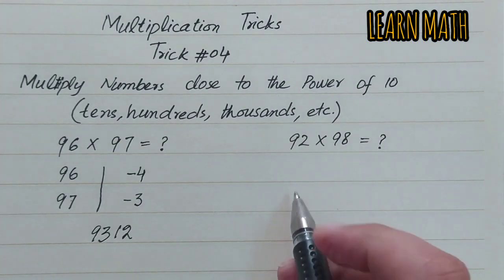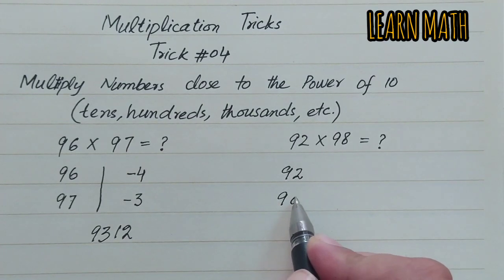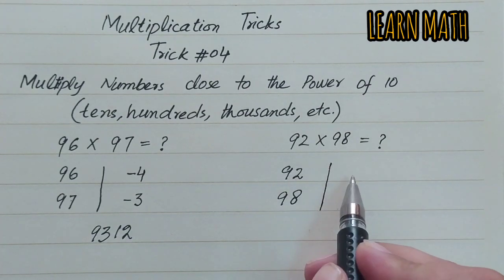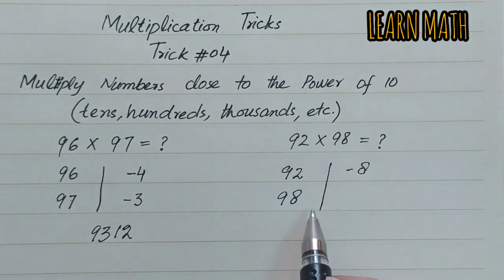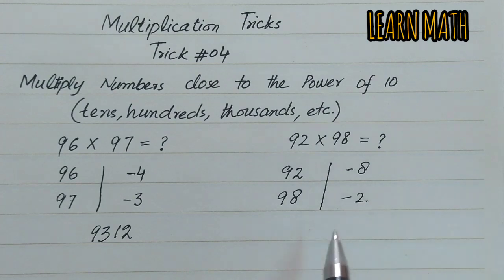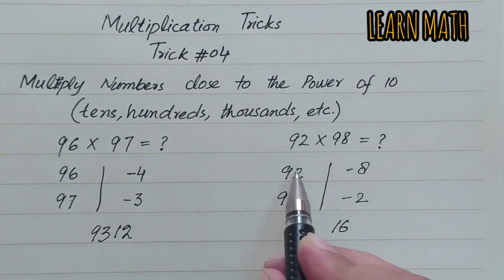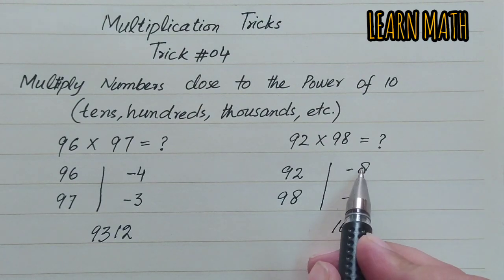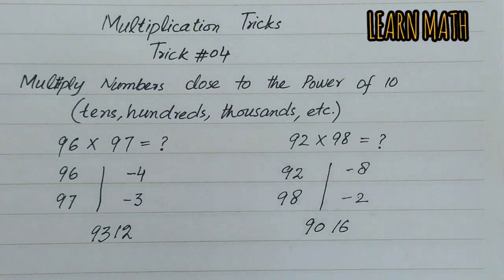Here we will write 92 and 98. Subtract 100 from 92, we will get minus 8. Then we will subtract 100 from 98 and we will get minus 2. Now multiply this, we will get 16. And 92 minus 2 is 90, or 98 minus 8 is 90. So this is the answer: 9016.